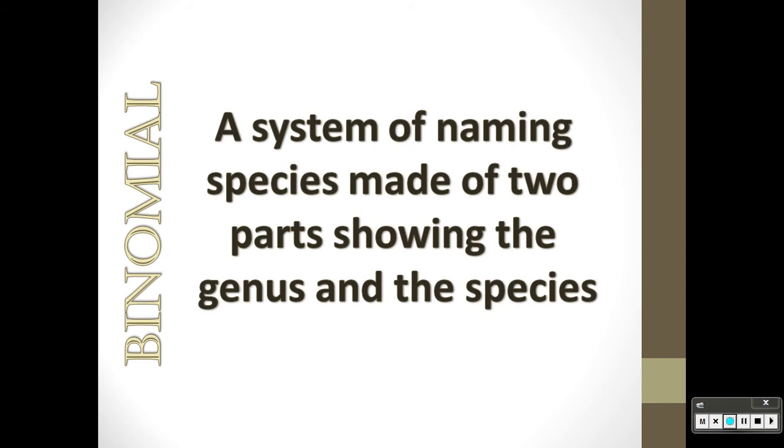Okay, so we're on section one part two: classifications and diversity. It starts off with the definition of a binomial system, which is a system that we use to name organisms based on two names, hence the term binomial.